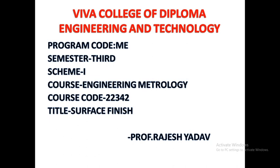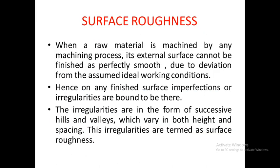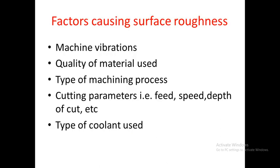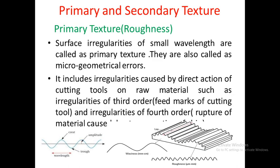Hello students, today we will be continuing with the chapter on surface finish from the subject engineering methodology. In the previous lecture, we studied what is surface roughness — surface roughness are the irregularities on the surface caused due to various actions such as cutting tools and different types of materials. We also saw the factors causing surface roughness, for example machine vibrations, quality of material, type of coolant used. We then studied primary texture and secondary texture.